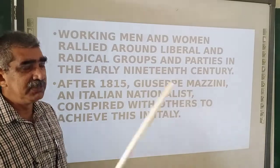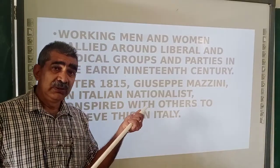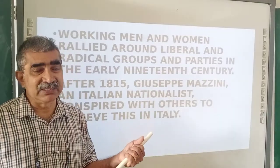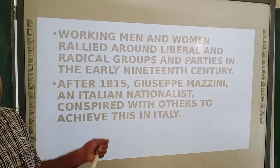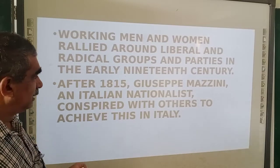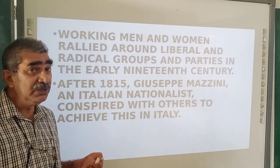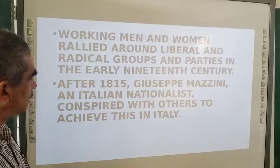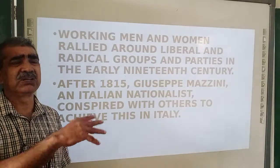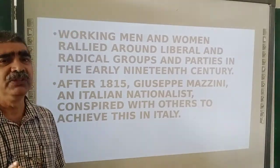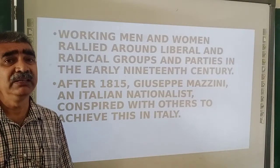After 1815, Giuseppe Mazzini, an Italian nationalist, conspired with others to achieve this in Italy. His revolutionary ideas about individual freedom were central to the Italian unification movement. Unification of Italy took place in 1871. Ideas of socialism — meaning freedom, liberty, and equality — were booming around in European society. Everybody wanted individual freedom; that was the demand.